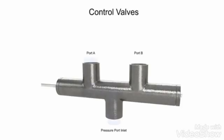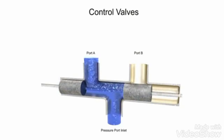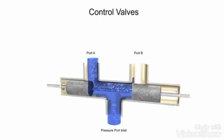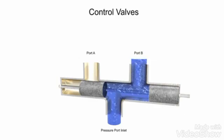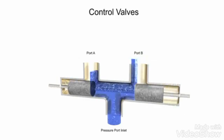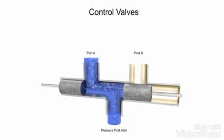Directional control valves are used to stop, start, route, and divert fluid streams without affecting the pressure level or the flow rate of the system. Directional control valves are identified by the number of ways that fluid can flow and the number of positions the valve can produce.